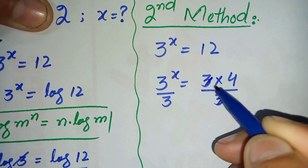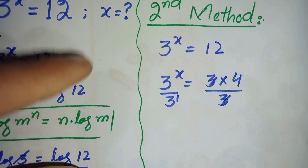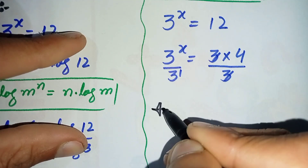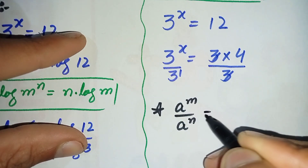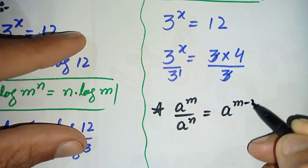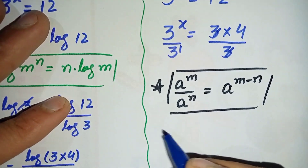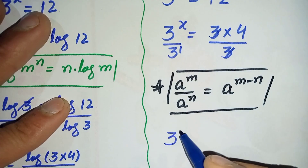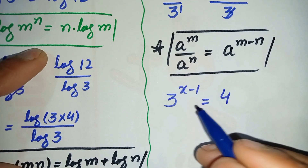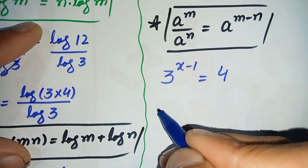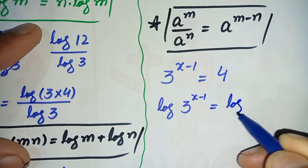On the right hand side, this 3 and this 3 cancel. The power of this 3 is 1, so on the left hand side we use the exponential property: a raised to power m divided by a raised to power n can also be written as a raised to power m minus n. Using this exponential property, we get 3 raised to power x minus 1 is equal to 4.